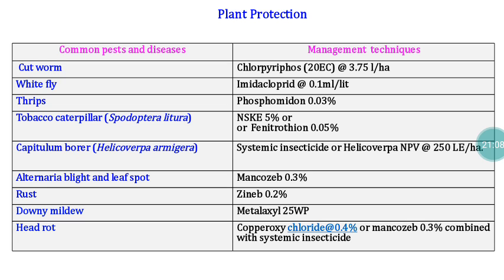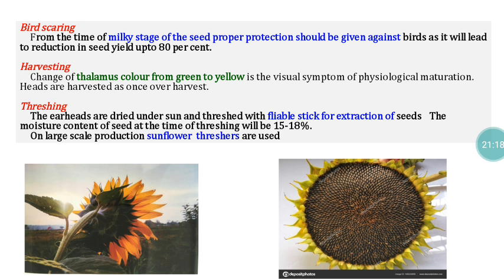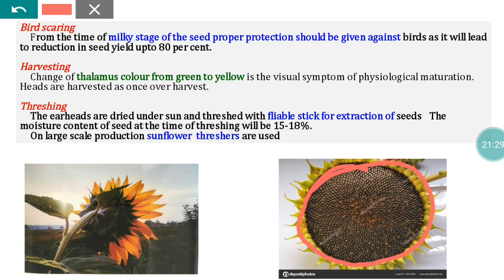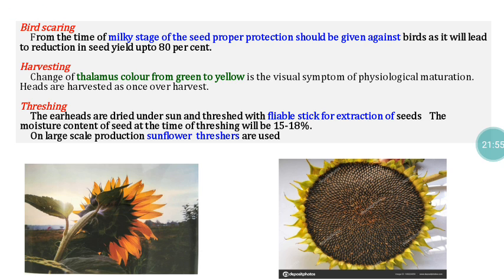For plant protection, pests and diseases cause problems — details are covered in entomology and pathology courses. Bird scaring is a very important operation in sunflower, as the seed-filled heads are an attractive food source for all living creatures — from sparrows to peacocks — which visit and damage the heads. Therefore, adequate protection of heads against birds is essential.